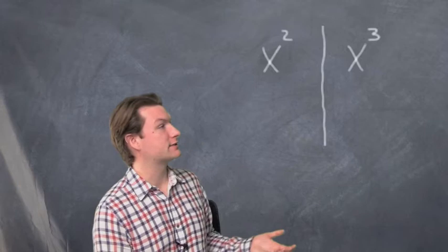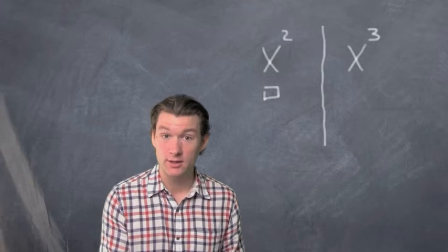Alright, well first of all, we call the first one x to the second or x squared. Those names point to the same thing. x to the third could also be called x cubed. It's another name for it.